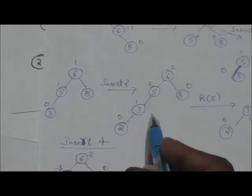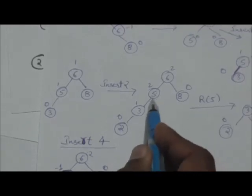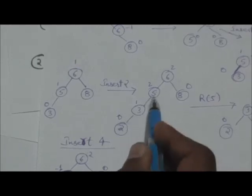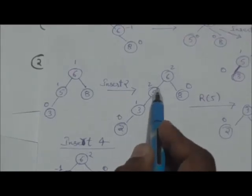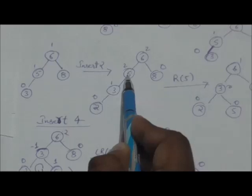These two nodes have a balance factor of plus 2 and plus 2, so it is an unbalanced tree. We rotate the tree rooted at the unbalanced node that is closest to the newly inserted leaf. We will perform a single right rotation on the subtree rooted at node 5. After performing this single right rotation, we get this balanced AVL tree.